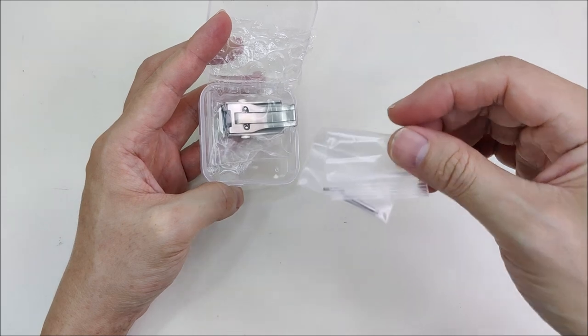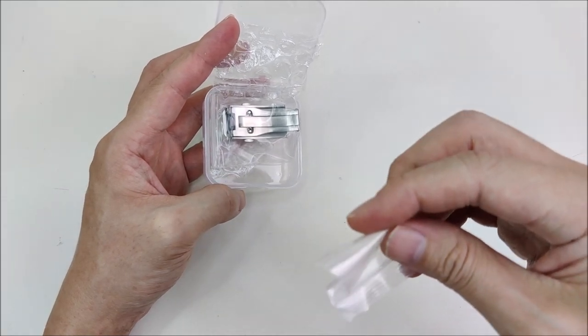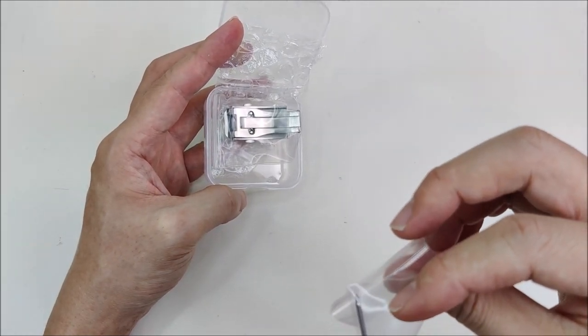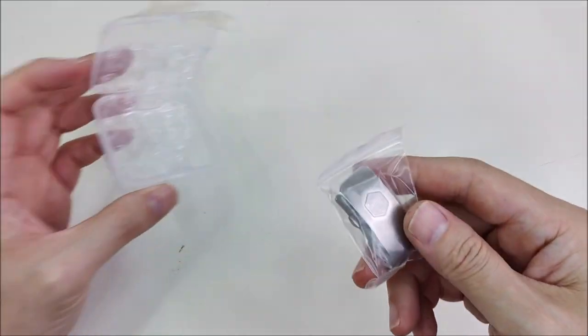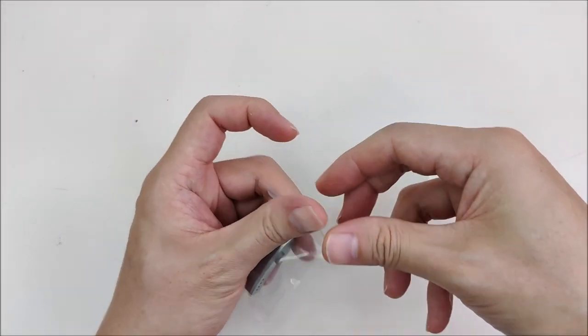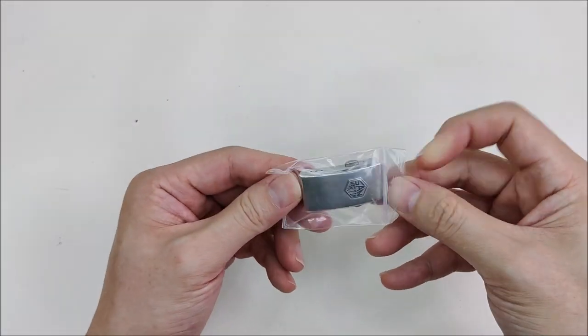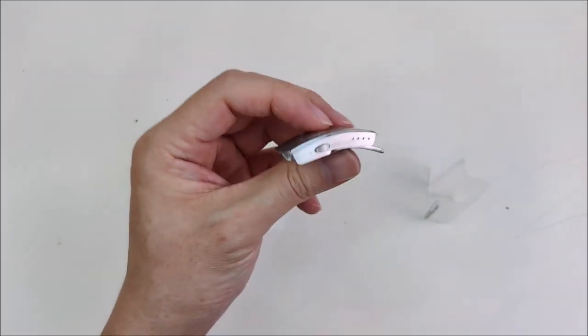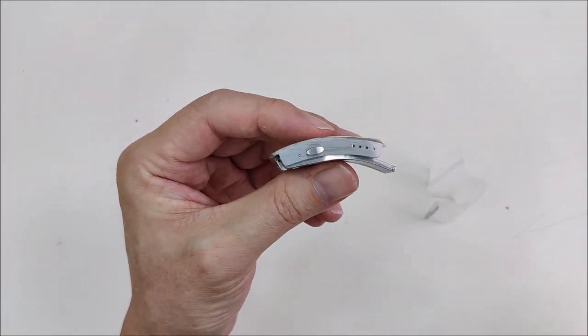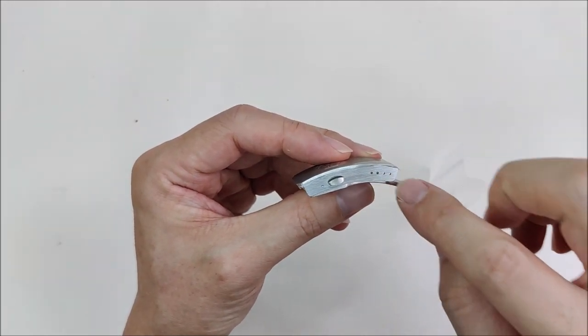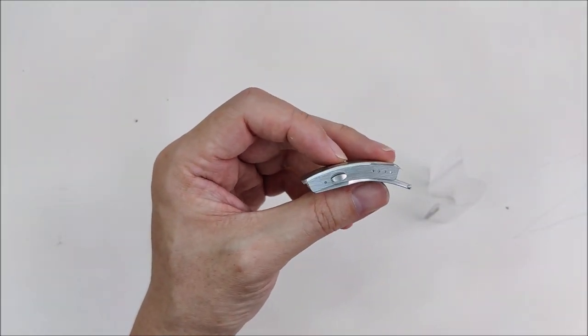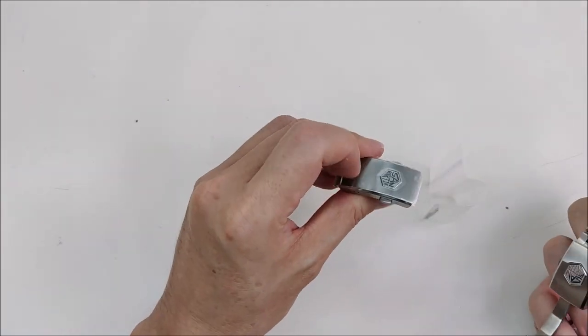Okay, so we have spring bars, I believe, some collars, and we have a clasp. All right, so this is a clasp with one, two, three, four micro adjustment positions. I purchased this clasp to replace the one on this watch.